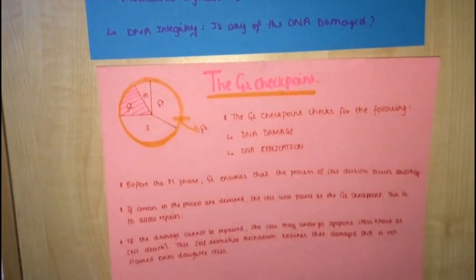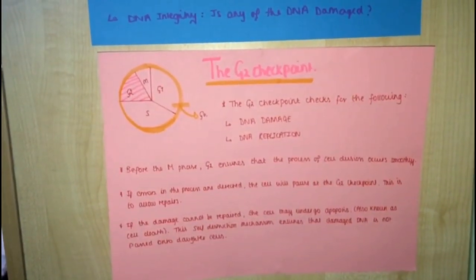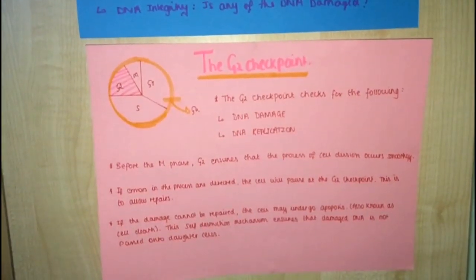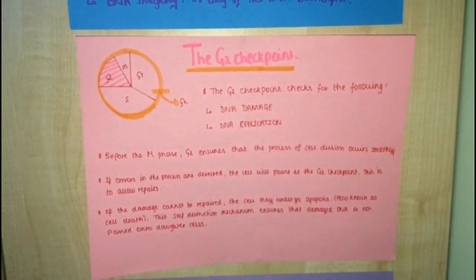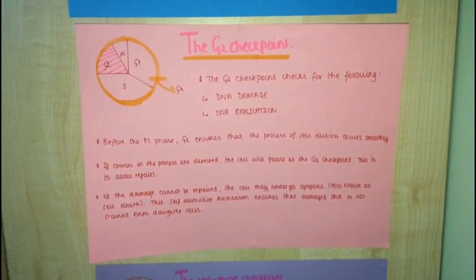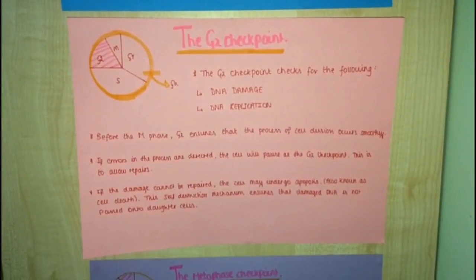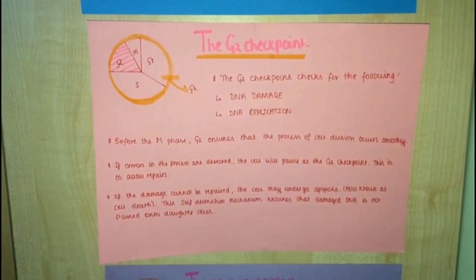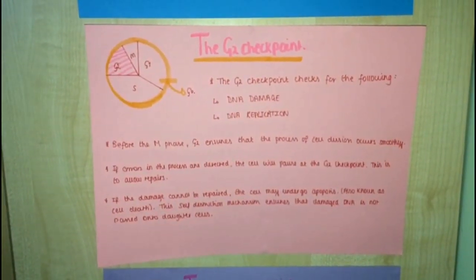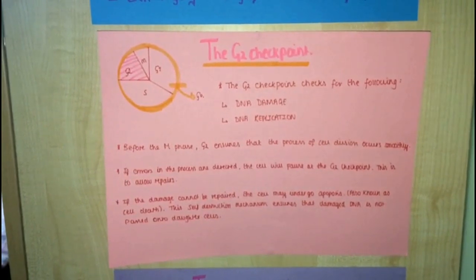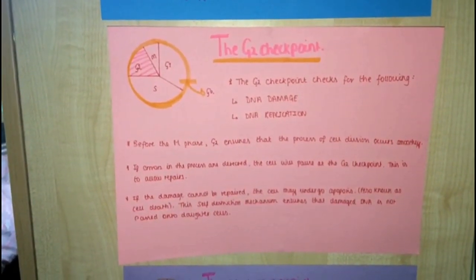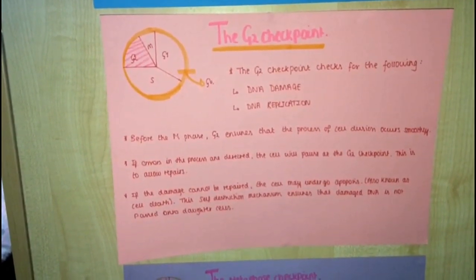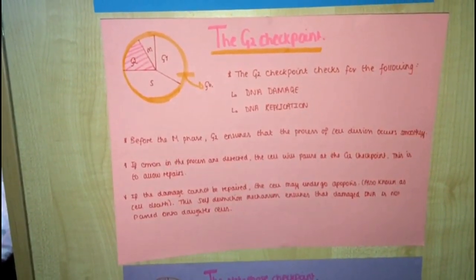Following this, we have the G2 checkpoint. The G2 checkpoint checks for DNA damage and DNA replication. Before the M phase, G2 ensures that the process of cell division occurs smoothly. If errors in the process are detected, the cell will pause at the G2 checkpoint. This allows repairs. If damage cannot be repaired, the cell may undergo cell death. This self-destructive mechanism ensures that all damaged DNA is not passed onto daughter cells.